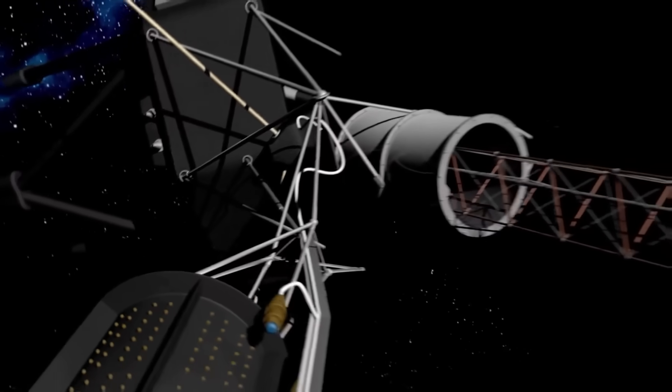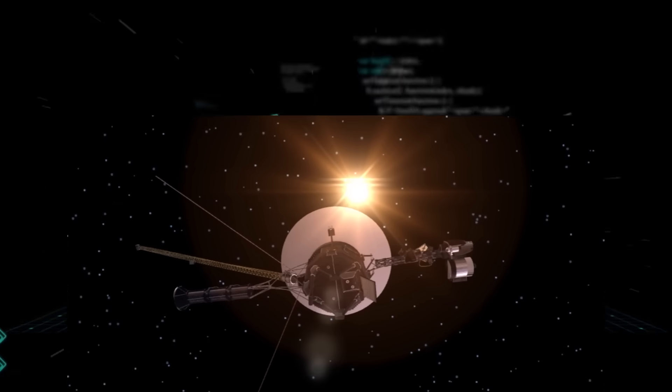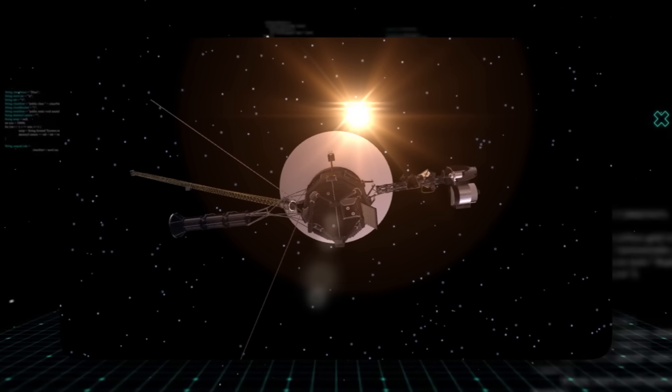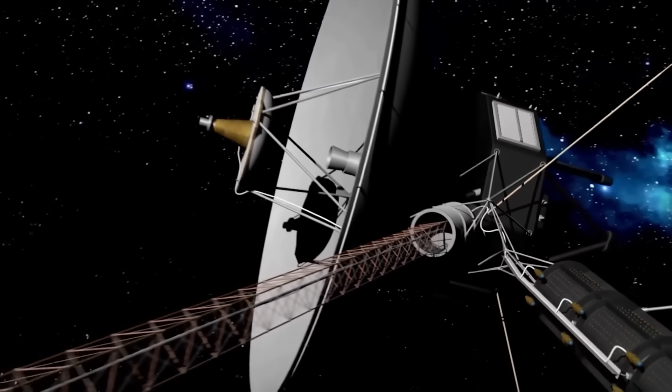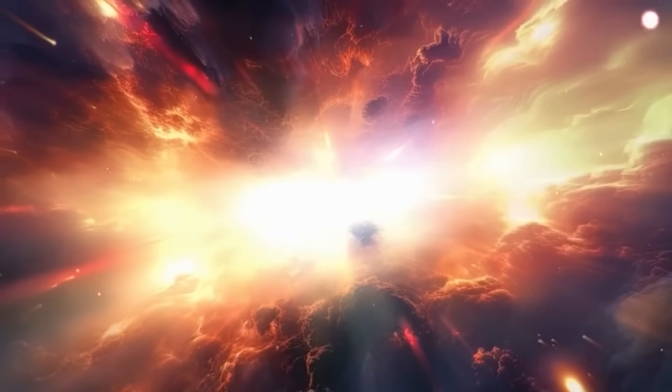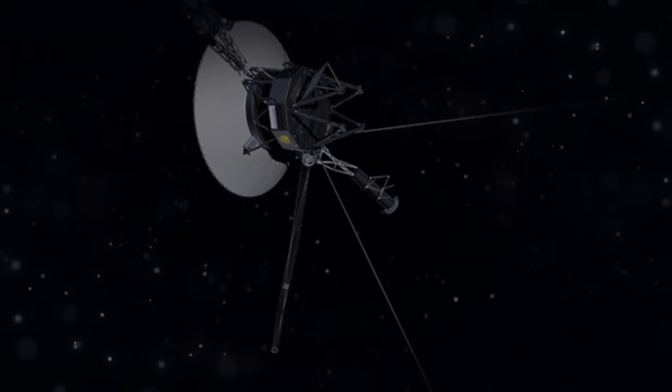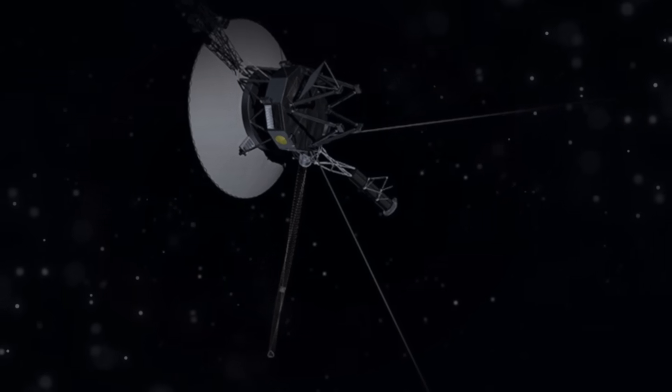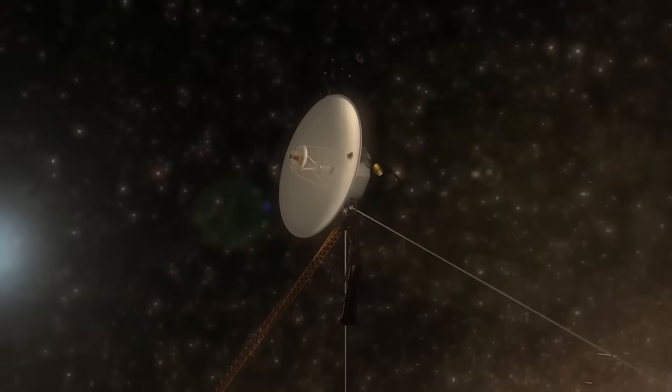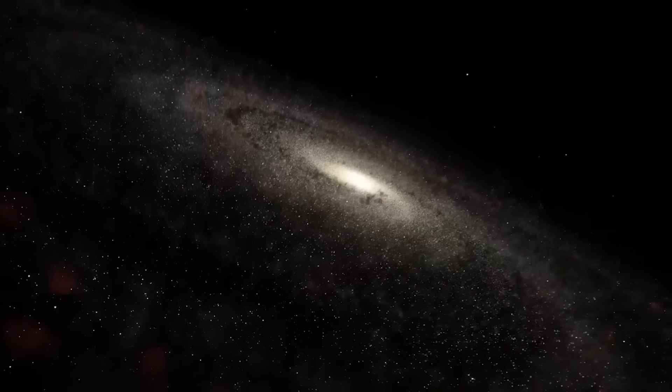But there's a much darker interpretation. The golden record contains a map. Etched onto its surface is a diagram showing the location of our sun relative to 14 known pulsars. It also points out the third planet. To any civilization advanced enough to find it, this is a treasure map with a big X marking Earth. The team that created it, led by the brilliant Carl Sagan, made a monumental gamble on the kindness of strangers. But what if they were wrong?